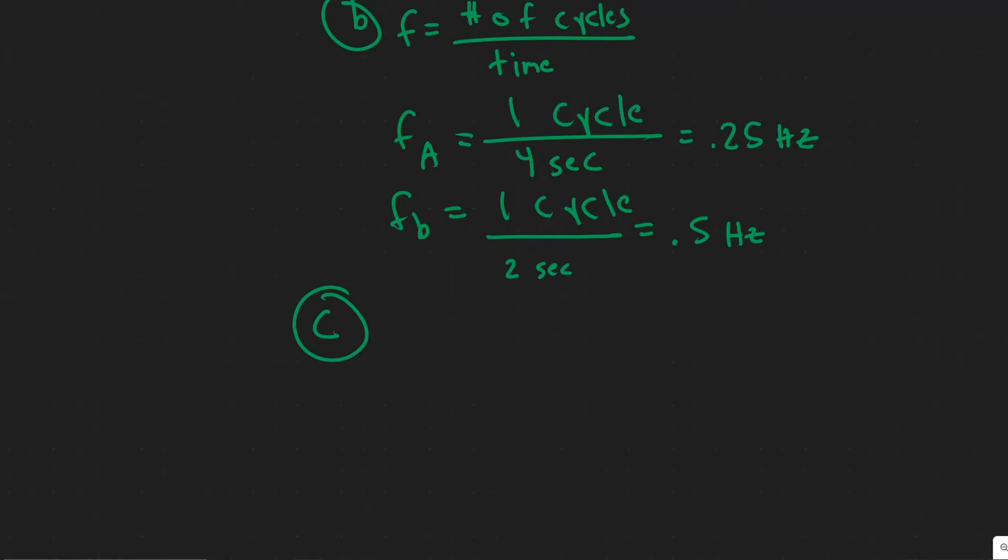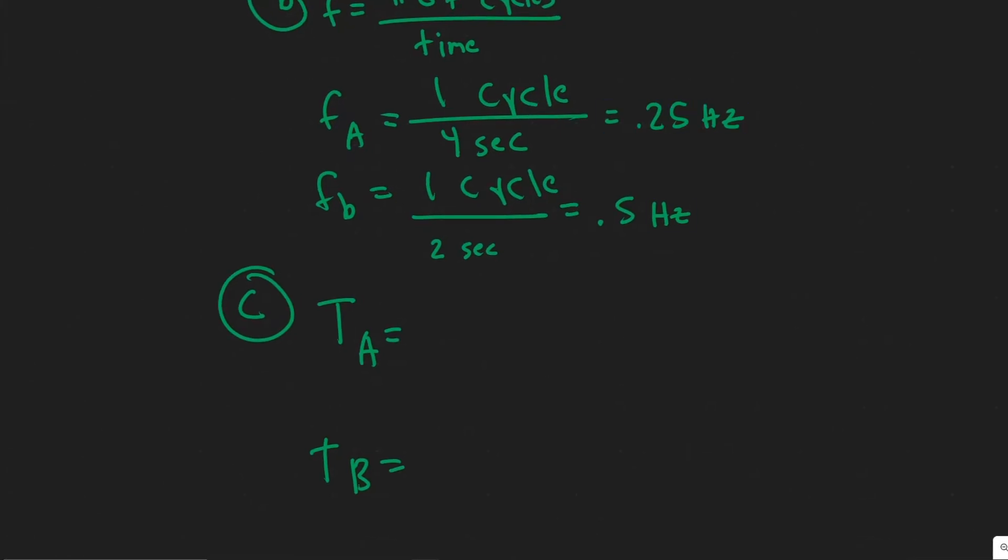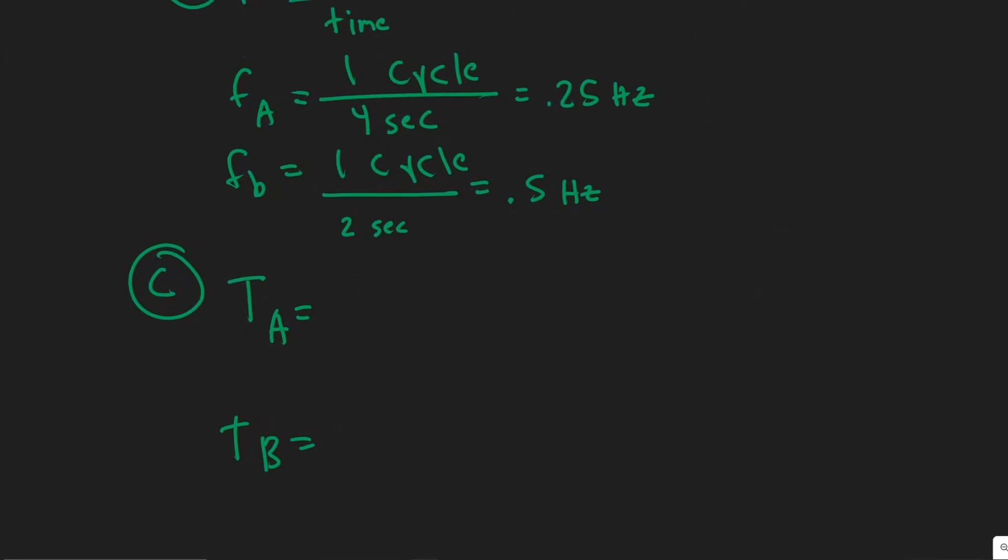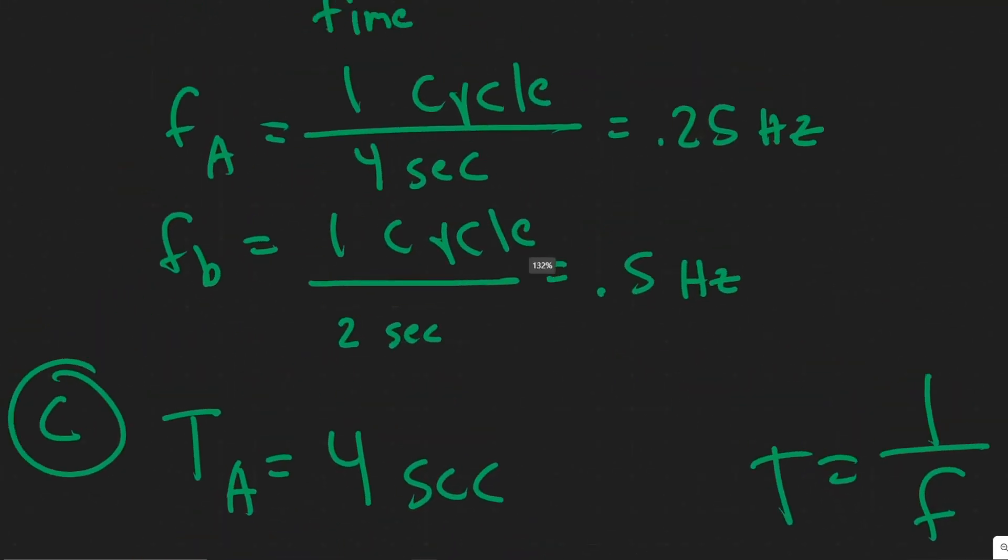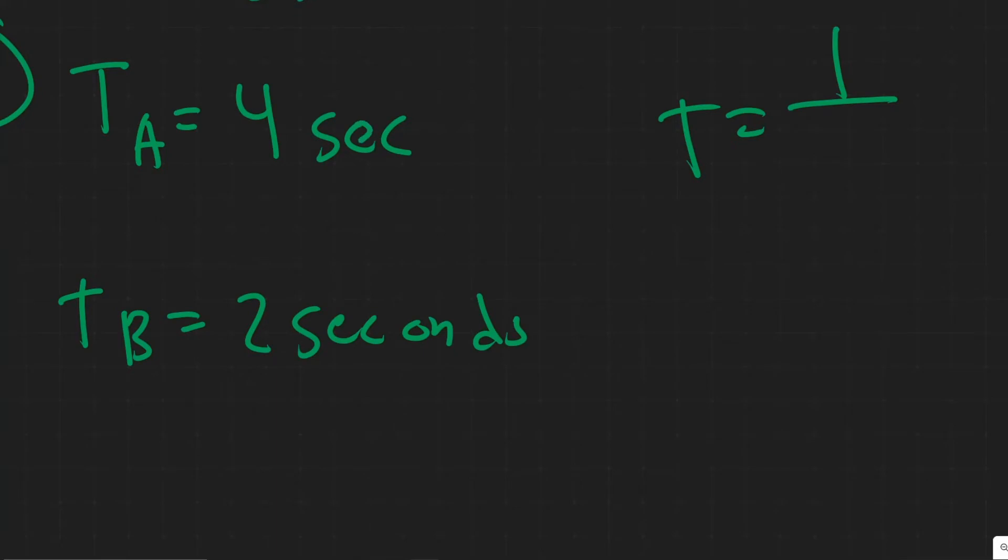Next, we're going to be finding the period. So we denote period with T. So we have T for A and T for B. The period is essentially how long it takes to complete one cycle. You can solve this by doing one over the frequency. So one over F. So for this one, it would be one over 0.25, which is four. And this one is just measured in time. And then this one would be one over 0.5, which is just two seconds. So the period is just one over the frequency. Basically, just how much time it takes to complete one cycle. So you can see here, one cycle takes four seconds. So the period is four seconds. And here it took two seconds. So the period is two seconds.